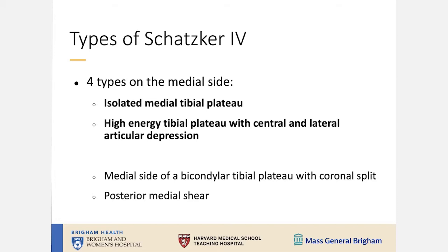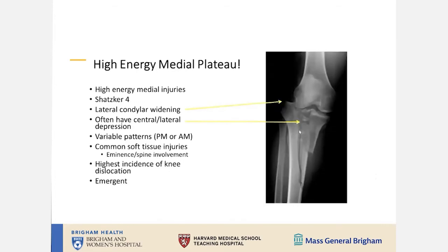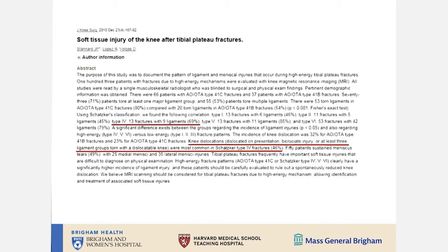This is the high-energy medial tibial plateau fracture where you have dislocation of the entire knee - the femur goes with the fractured medial portion, so the lateral proximal tibia does not line up with the lateral distal femur. As the lateral femoral condyle impacts onto the tibial plateau, you get lateral or central depression. You must be careful not to miss soft tissue injuries such as vascular injuries, nerve traction injuries, or transactions. Studies show an incredibly high incidence of lateral meniscal tears and ACL disruptions in addition to neurovascular injuries.